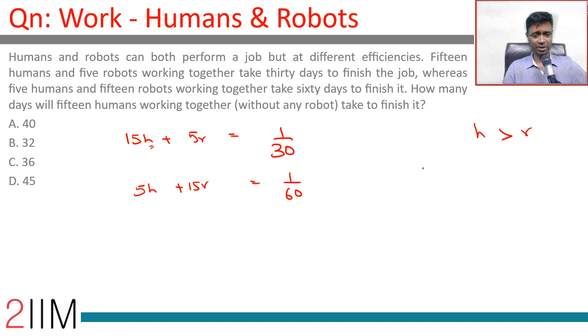So 15h + 5r = 1/30, 5h + 15r = 1/60. Find h, find 15h. What will that correspond to? You've got your answer.